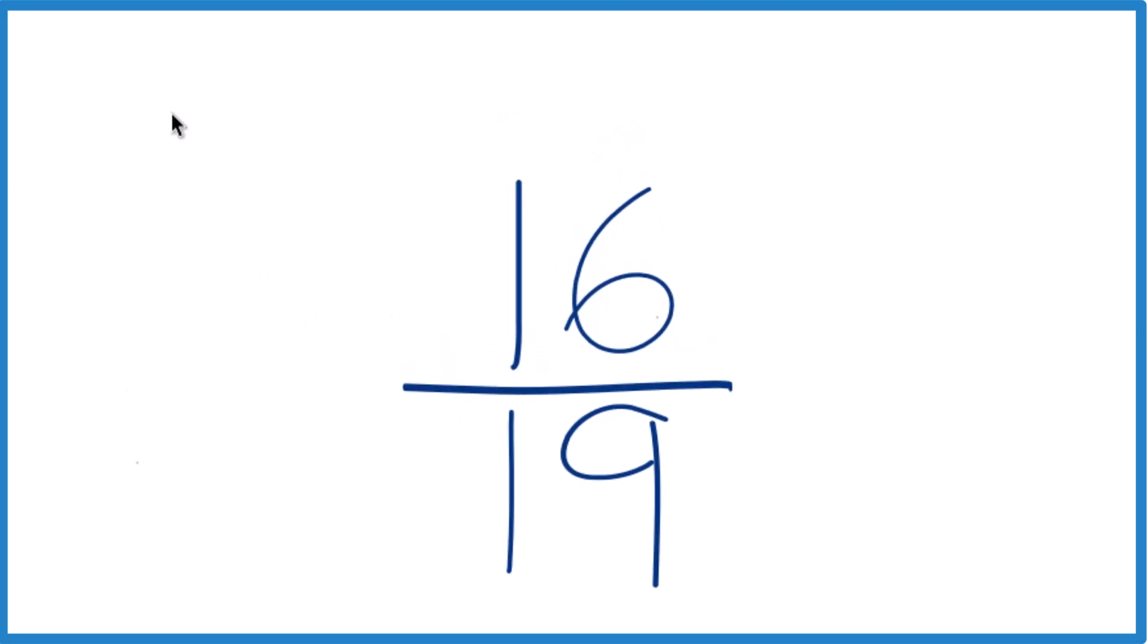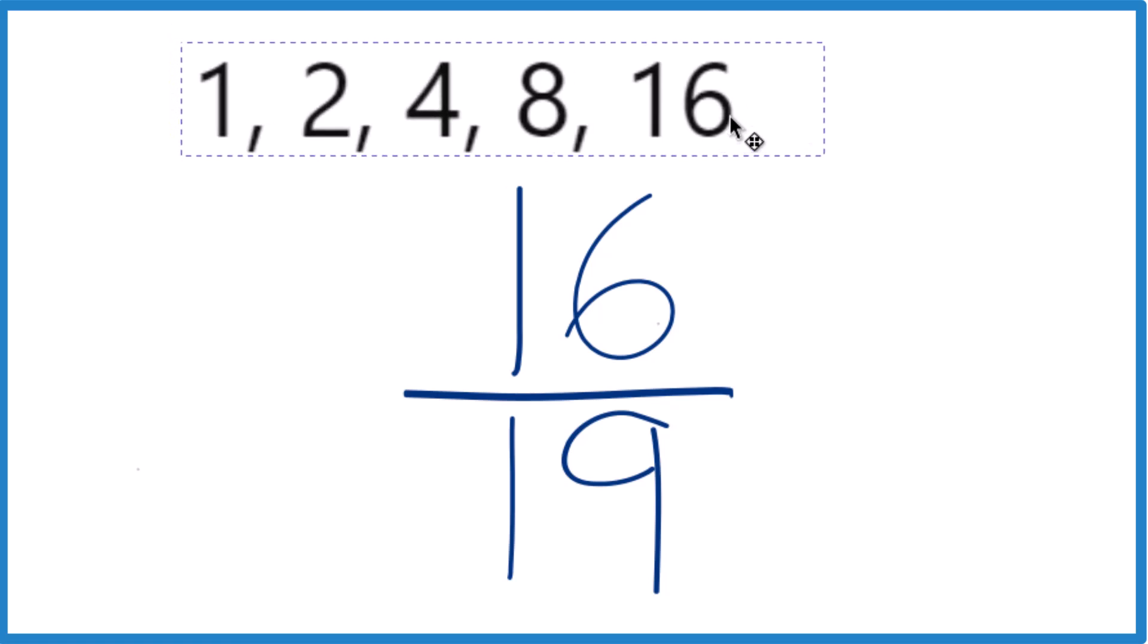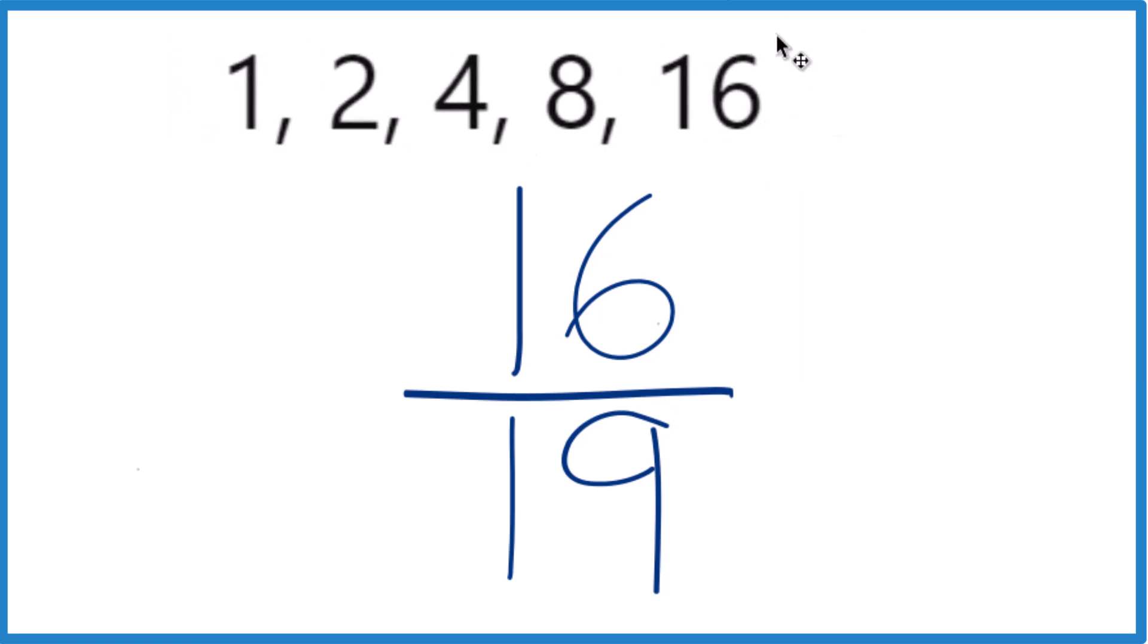So if we look at 16, these are the factors for 16. We have 1 times 16, 2 times 8, and then 4 times 4. That would give you a 16.